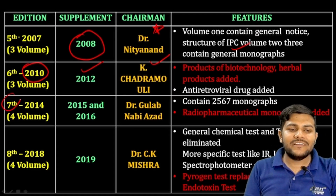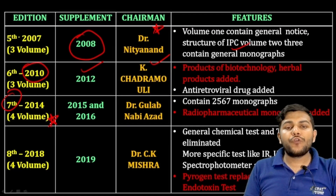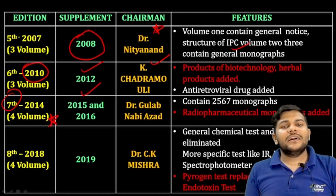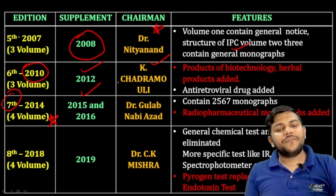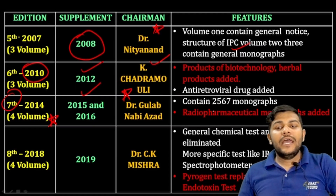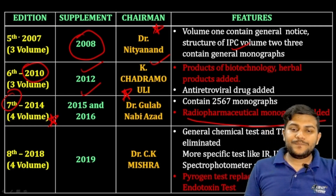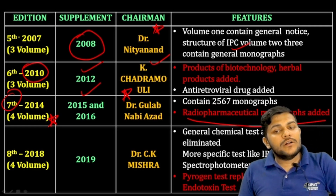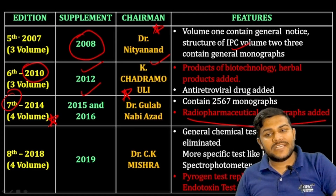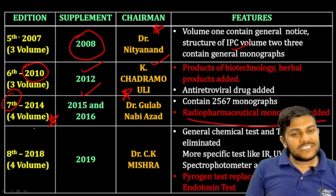After four more years came the seventh edition — the first pharmacopoeia to contain four volumes. It had two supplements in 2015 and 2016, under the chairmanship of Dr. Gulab Nazeeb Ali. It contained radiopharmaceutical monographs and approximately 2567 monographs in total.